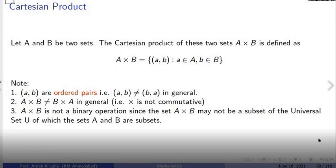In each of these ordered pairs, the first element, that means the left element, comes from the set capital A and the right element or the second element comes from the set B.